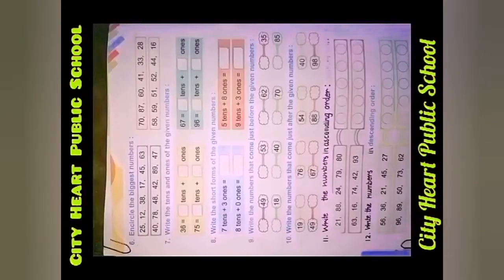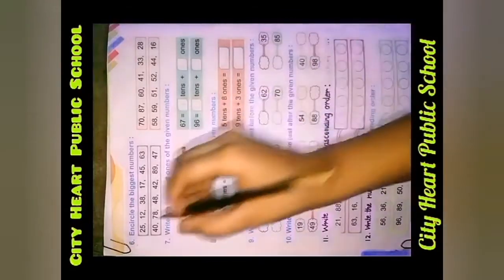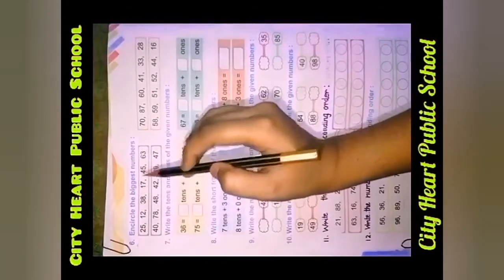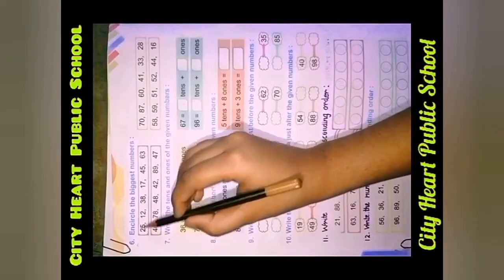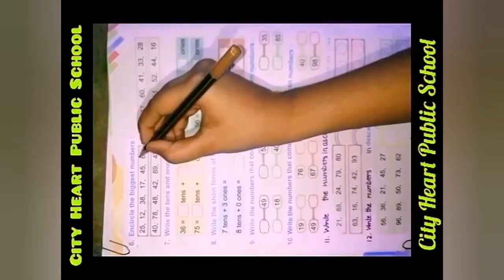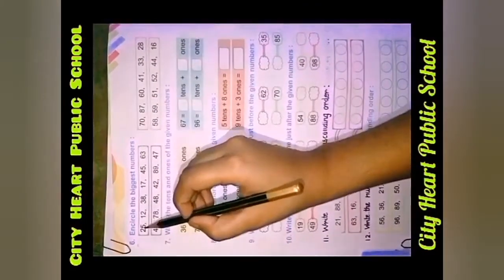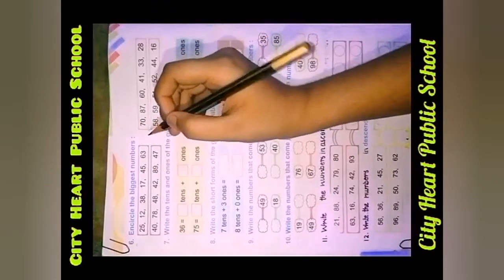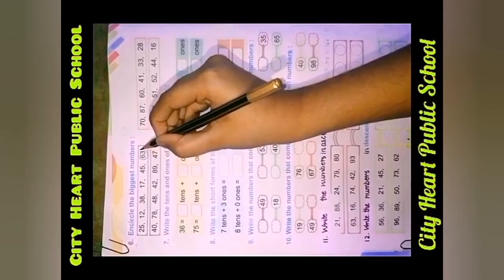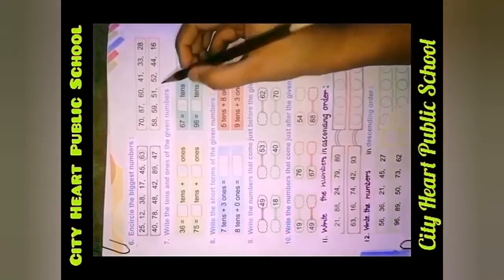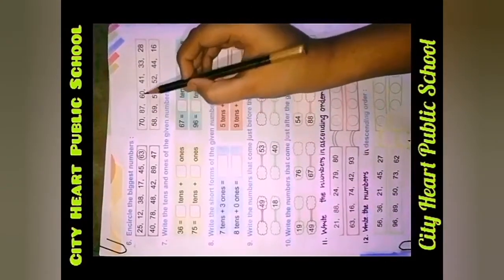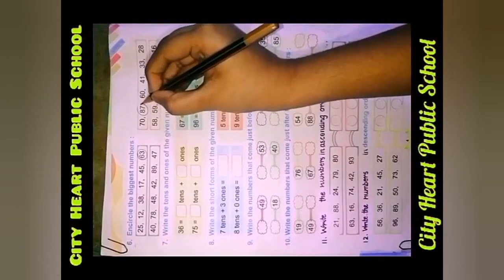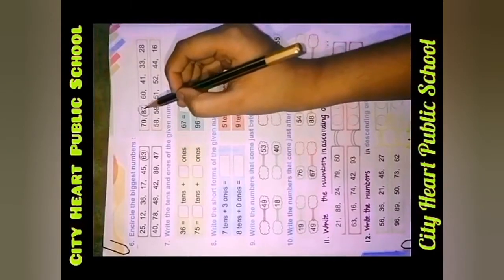Let's proceed to our next page. This is question number 6: Encircle the biggest number. Aapko sabse bada number encircle karna hai. Toh aapko jaise saare number ek box mein likhe hain, unmai se sabse bada jo number hoga, usko circle mein band karna hai. Toh ismai dekhte hain: 25, 12, 38, 17, 45 and 63. Ismai sabse bada number 63 hai. You have to encircle it like this. Pher iski baad: 70, 87, 60, 41, 33, 28. Ismai sabse bada number obviously 87 hai. Yeh sab aap apni previous classes se parh chuke ho. Aapko isi tarah encircle karna hai.